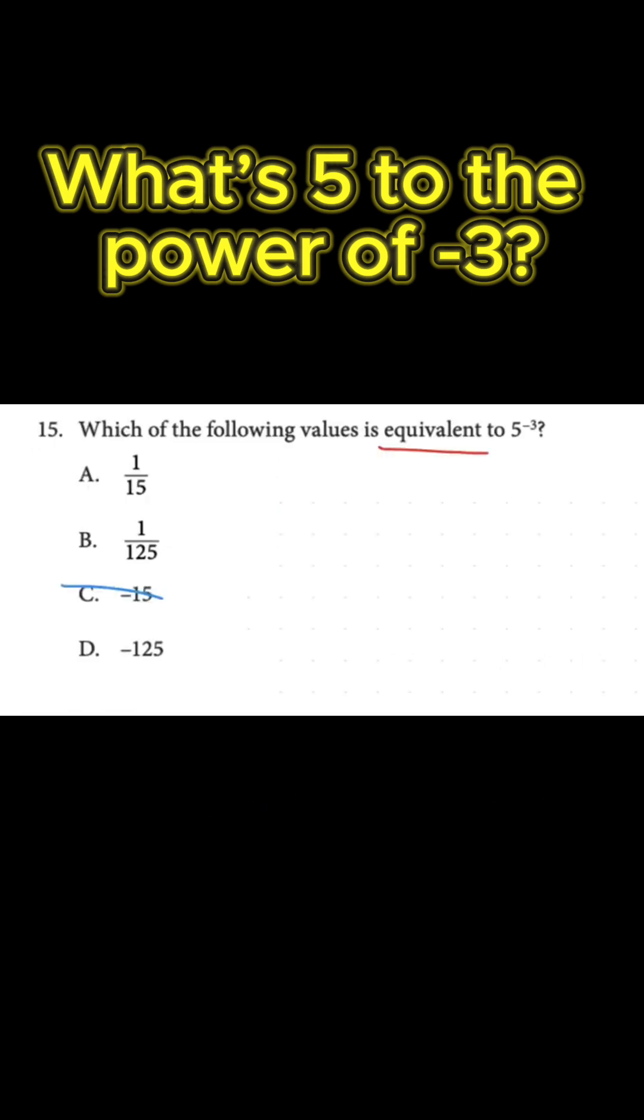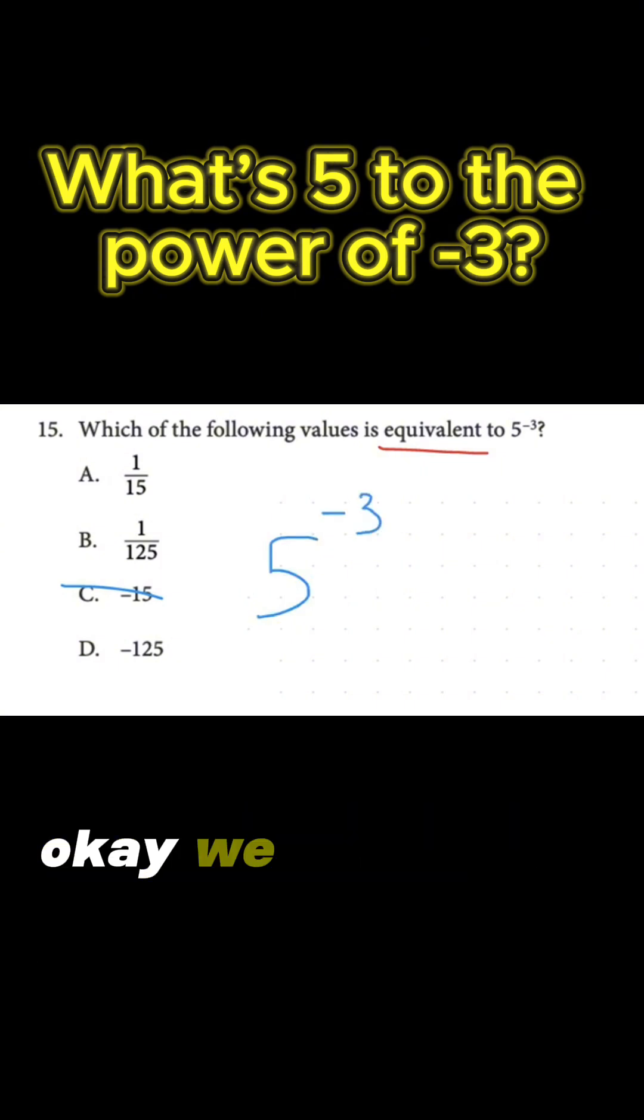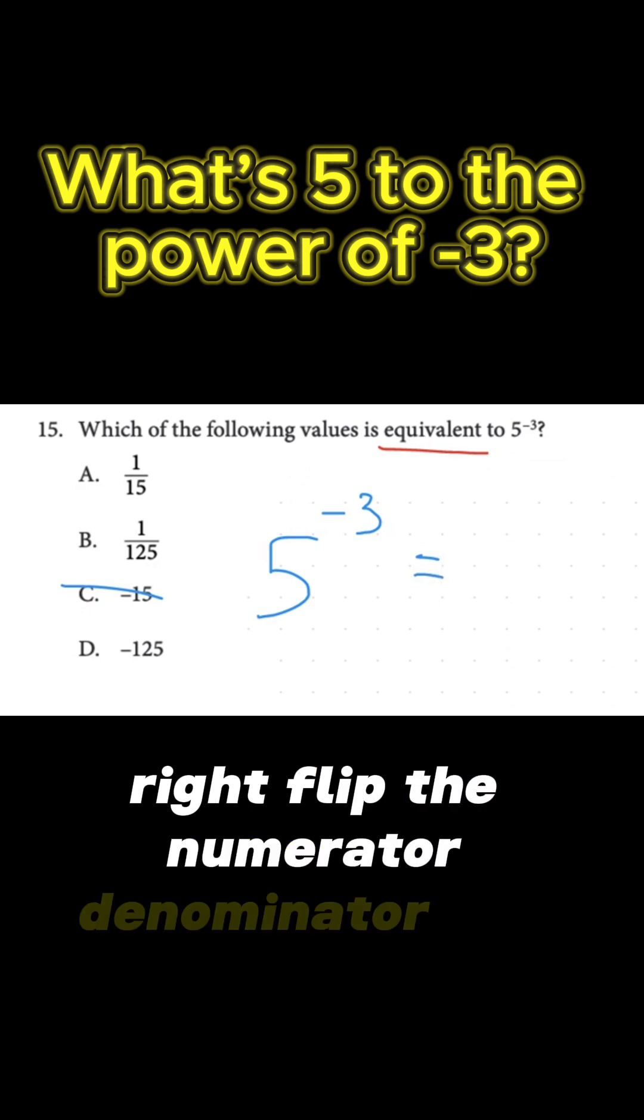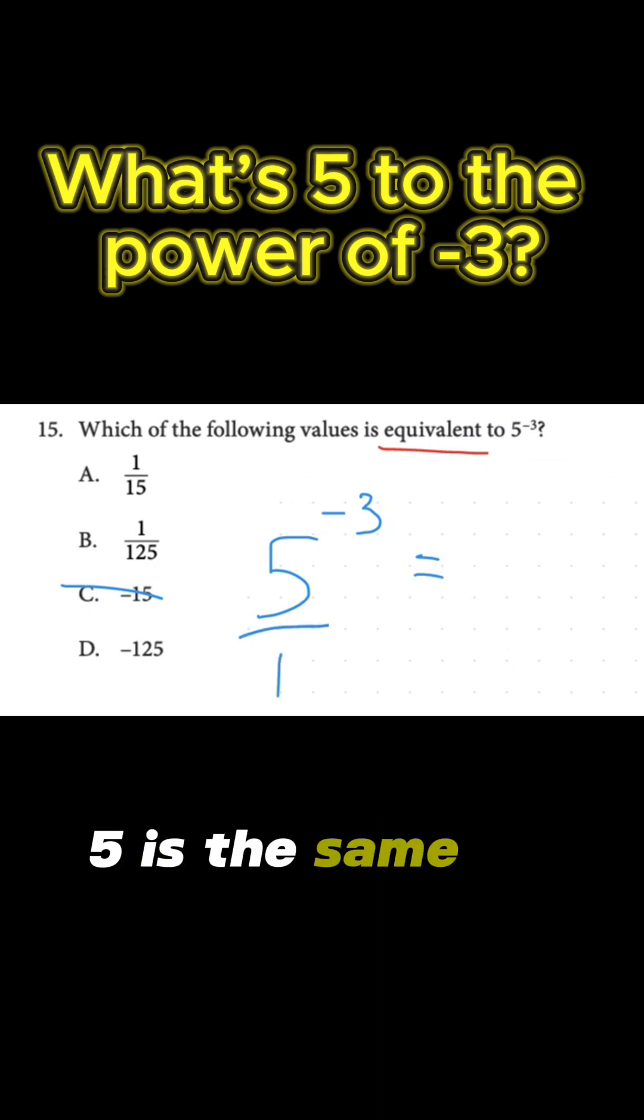Let's go back to this question here. We've got 5, we're trying to figure out 5 to the power of negative 3. We know it's a negative exponent, so we know we're going to take the inverse. Flip the numerator and denominator. There's an implied 1 underneath 5. 5 is the same as 5 over 1.